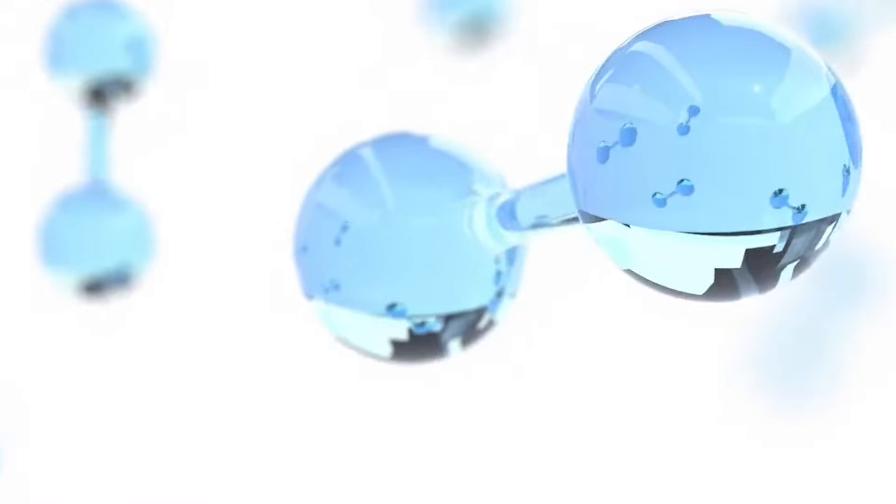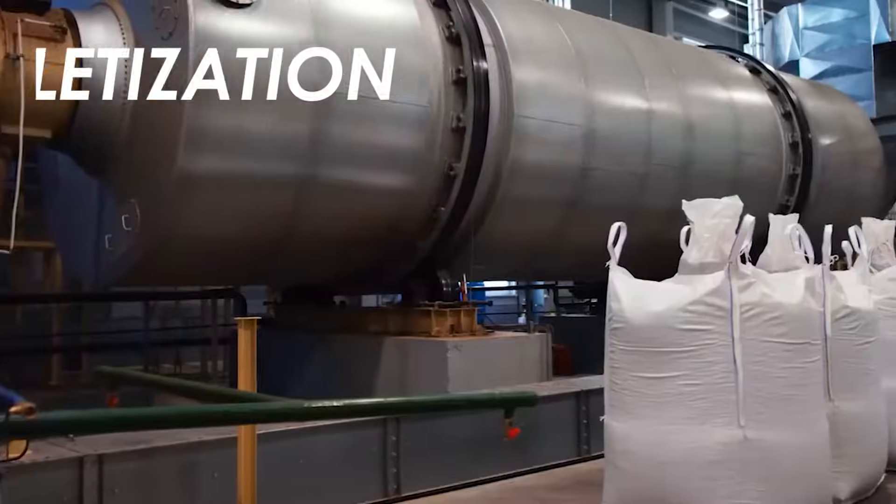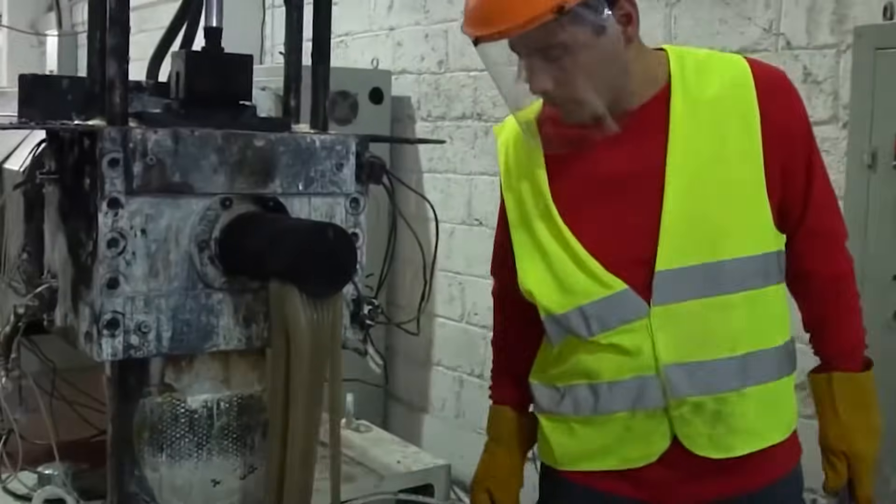Not only can nurdles be utilized in the creation of primary plastic, but they can also be utilized in the recycling process. Through the process of pelletization, recovered plastic materials can be transformed into recycled plastic pellets. These pellets are then utilized in the production of new plastic products that contain recycled components.